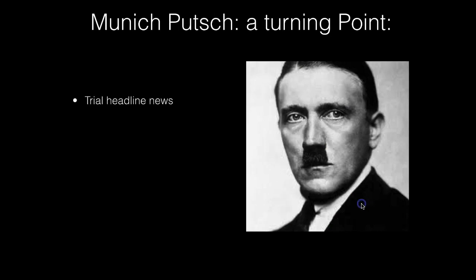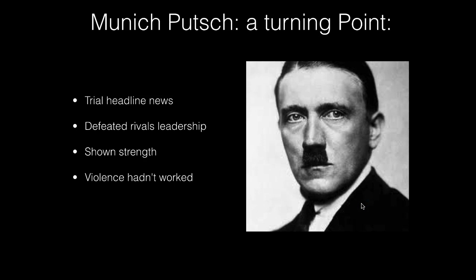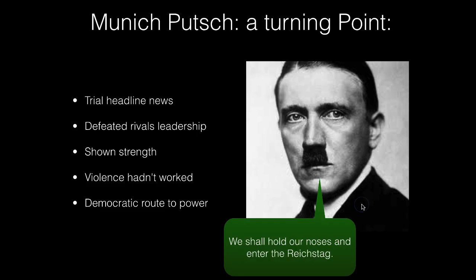The Munich Putsch was in many ways a turning point. Although the putsch itself was an abject failure, it generated national headline publicity for Hitler, allowed him to defeat rivals within the leadership, and showed some right-wing backers a degree of organizational strength. Most importantly, it showed Hitler that violence hadn't worked and a change of strategy was necessary. He now decided on taking a democratic route to power - though this did not mean he had become a committed democrat. As he put it: 'We shall hold our noses and enter the Reichstag' - he intended to gain electoral support and then destroy democracy from within.